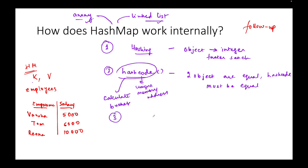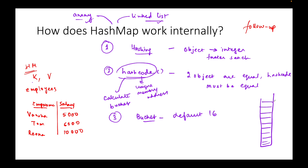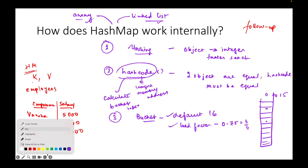Now comes the concept of buckets. We use array and linked list, and we use the term called buckets. By default, there are 16 buckets implemented internally in a HashMap, so the index values range from 0 to 15. There's also another term called load factor, which tells at what point the resizing of the HashMap will happen. 0.75 means three-fourths, so three-fourths of 16 is 12. When 12 buckets are already full, the HashMap is going to resize.